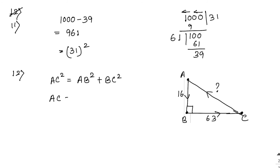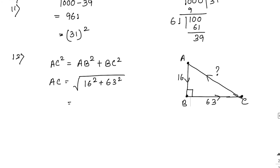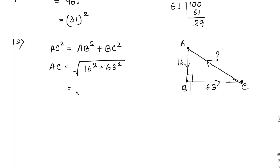AC equals the square root of 16 squared plus 63 squared, which equals the square root of 256 plus 3969, equals the square root of 4225, which is 65 meters. That is the distance Amit walked while returning.